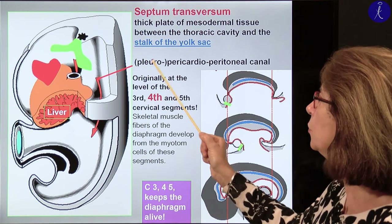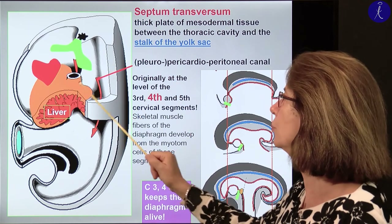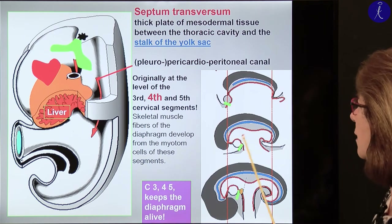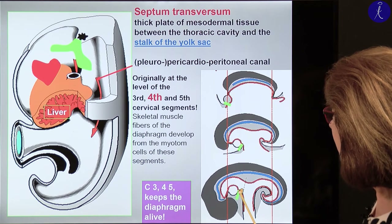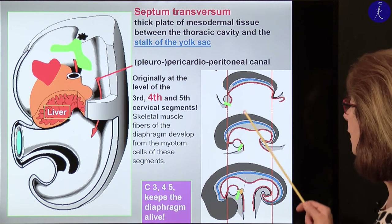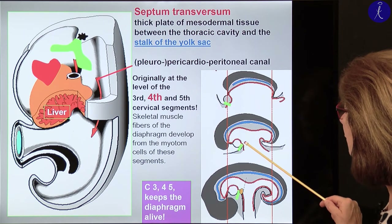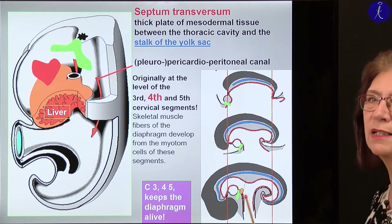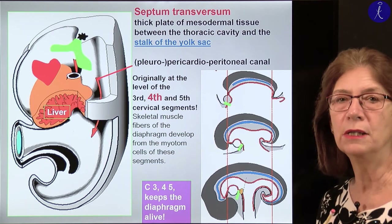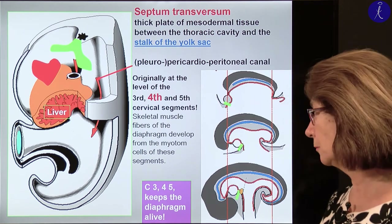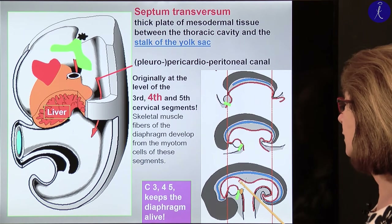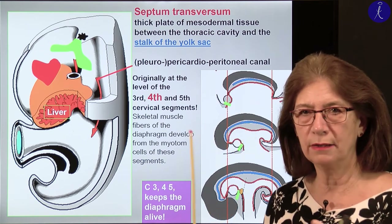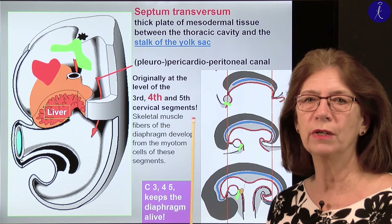If we figure out where this territory was just before the deflection started, it was between the midgut and the heart primordium — at the very front edge of the trilaminar germ disc before folding. When the folding happens, it will be opposite to basically the fourth cervical segment. Parallelly with all these happenings — the heart tube formation, the septum transversum formation, and the folding — the segmentation started in the paraxial mesoderm.